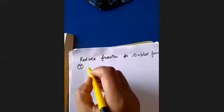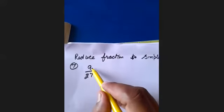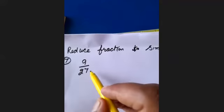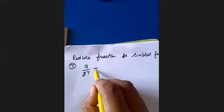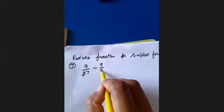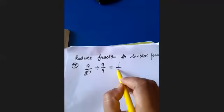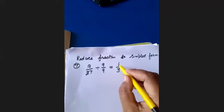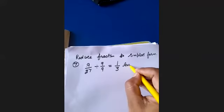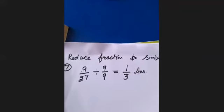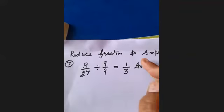Question 7: your fraction number is 9 upon 27. The numerator is 9 and the denominator is 27, and both are multiples of 9. So divide by 9. 9 divided by 9 is 1, and 27 divided by 9 is 3. So the simplest form is 1 upon 3.